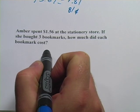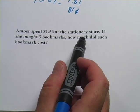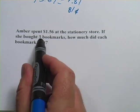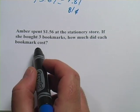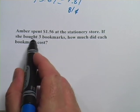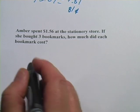This last one says, Amber spent $1.56 at the stationery store. That stationery store is busy. If she bought three bookmarks, how much did each bookmark cost? So we have the total amount she spent, and we have to divide it up between three bookmarks to find out what the cost of one of them is.